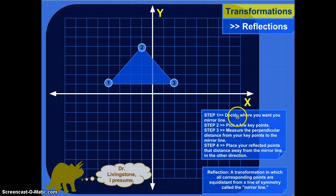And then you measure the perpendicular distance from your key points to the mirror line. What I mean by that is, I want to measure the distance from, for example, this point to my mirror line. And this is the perpendicular distance. So I'm not measuring from here to over here. I'm measuring here straight down to where the line from this point to the mirror line forms a 90 degree angle.